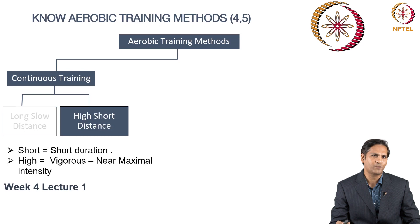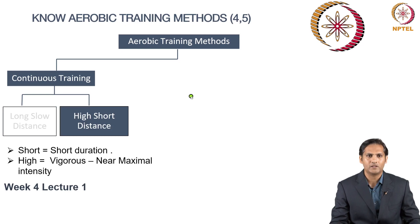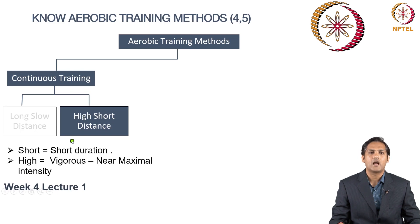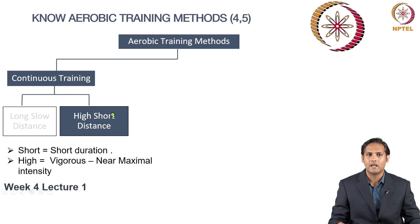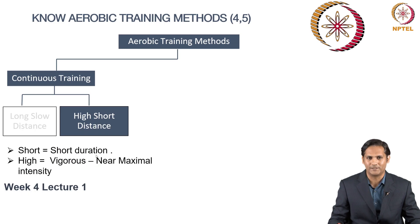Now let's explore what is high short distance. Here 'high' represents vigorous to near-maximal intensity, and 'short' represents the volume — that is, short duration. So compared to long slow distance, high short distance is obviously of higher intensity and shorter duration or distance.